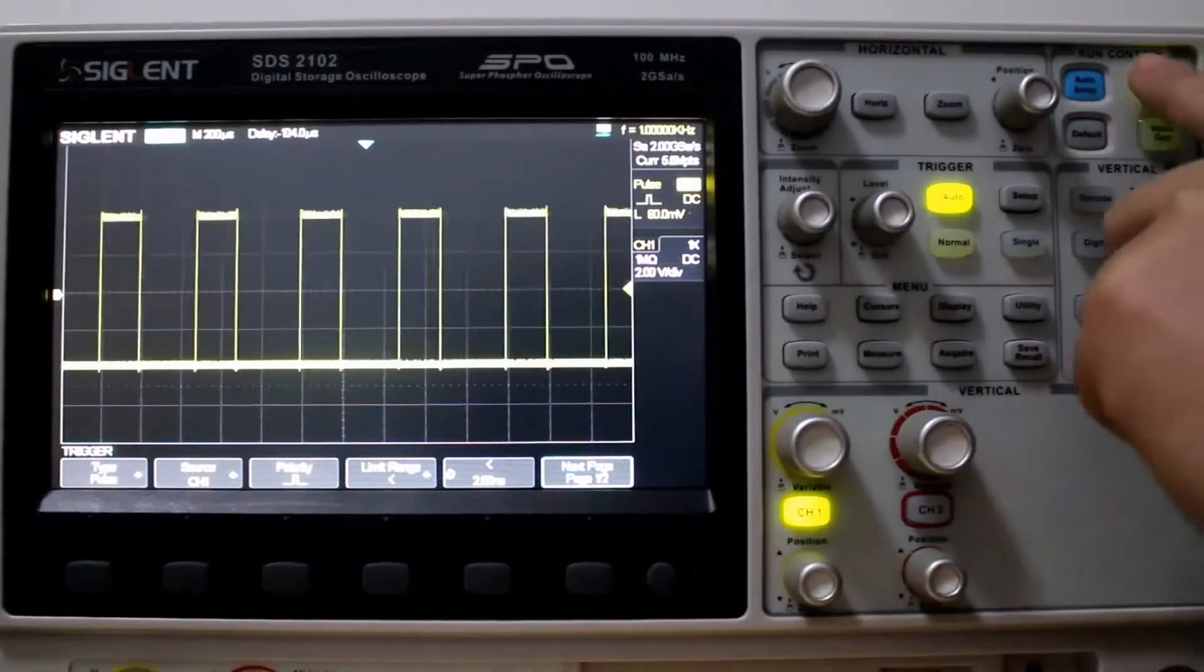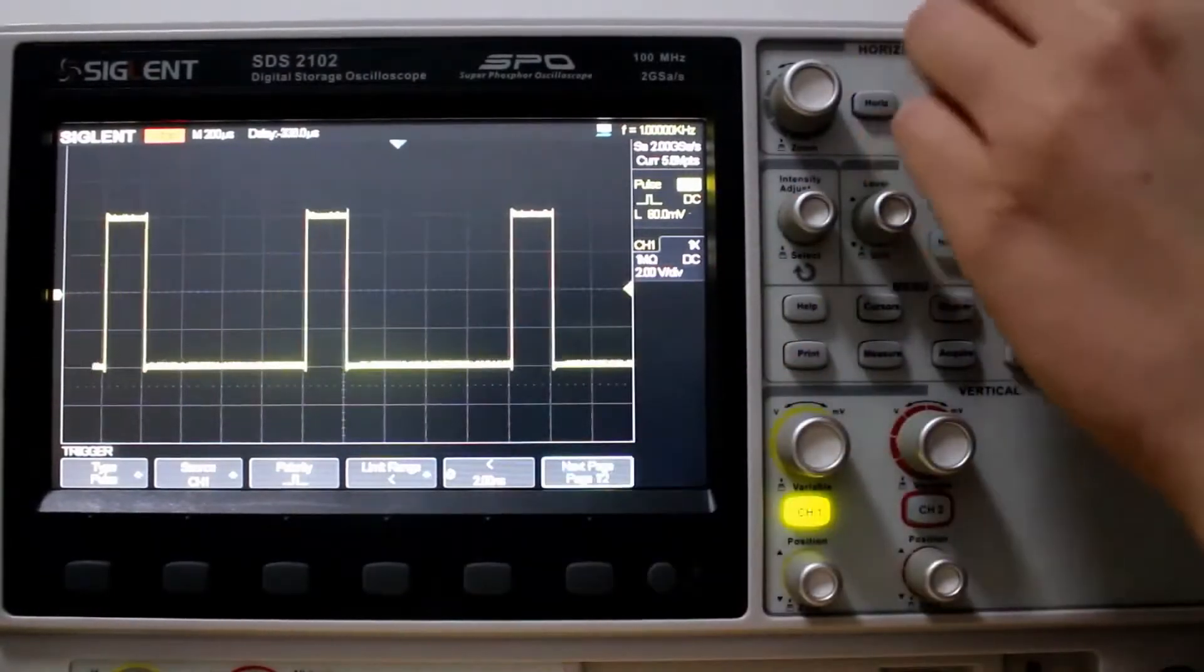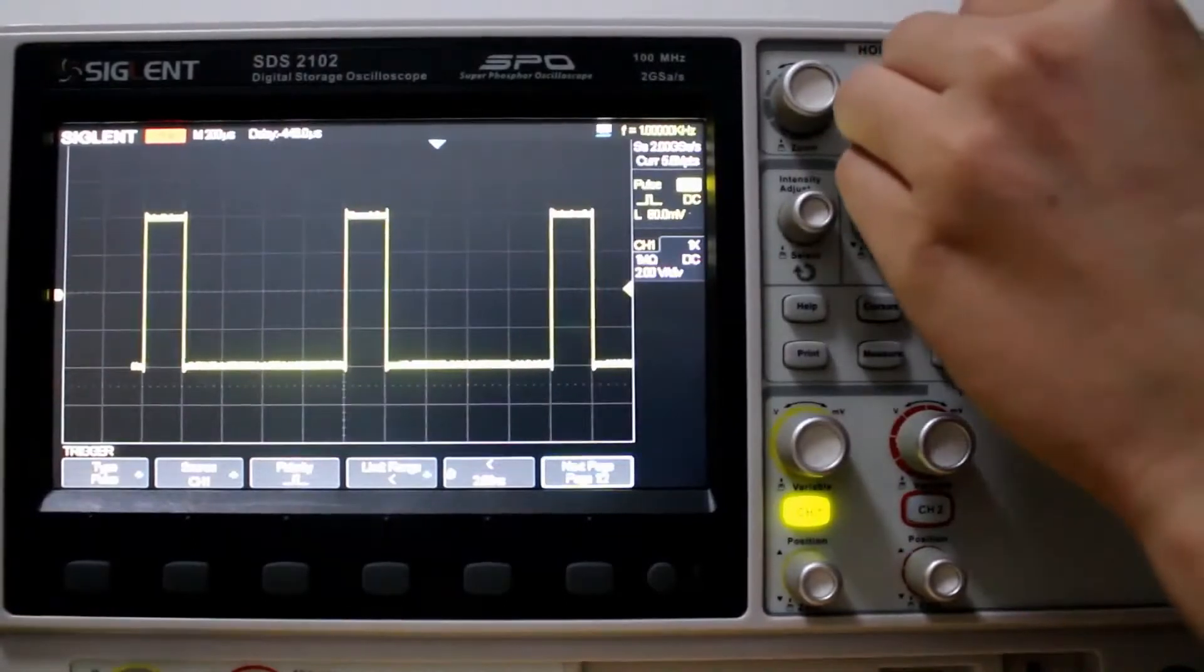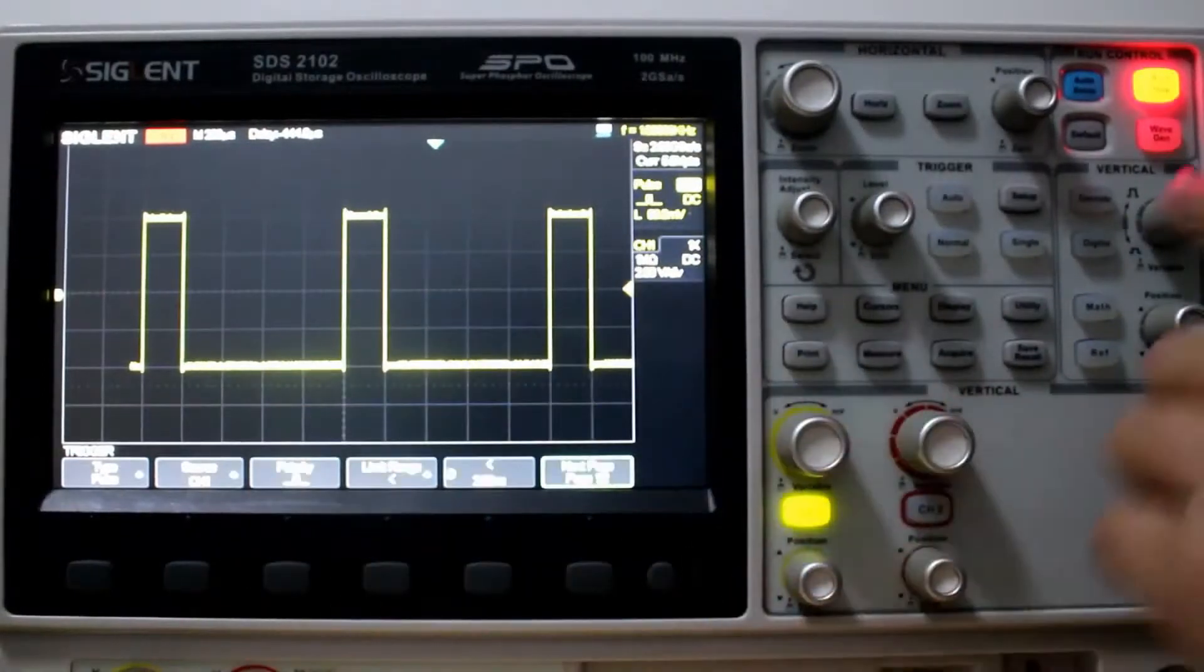So now, we've got it set to less than, so we'll stop it, have a look. And then you can see it's about 200 microseconds per division, and that looks like almost exactly one division.